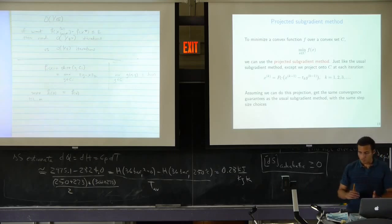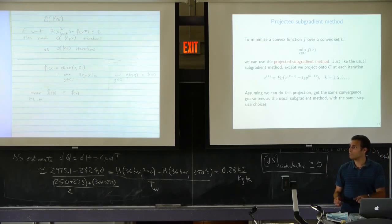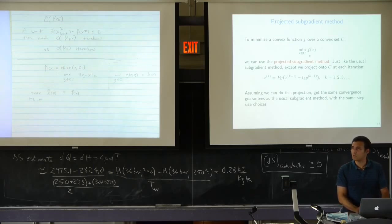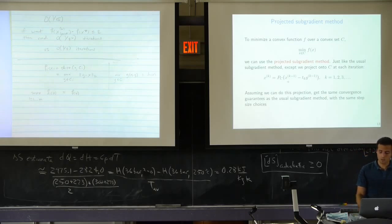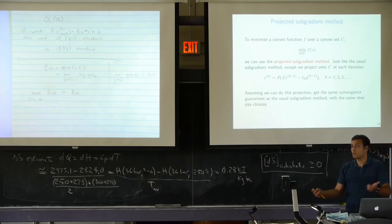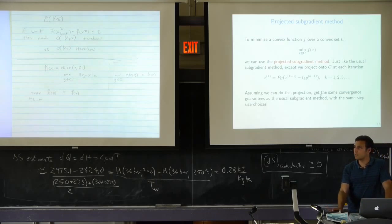There's a more general version of subgradient method that handles convex functions over constraint sets. If we want to minimize a convex function f over a convex set C, we apply subgradient updates and then project back onto C at every step—that's projected subgradient method. We maintain the same convergence guarantees with the same step size choices.